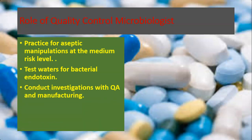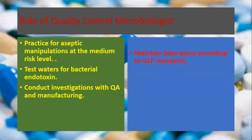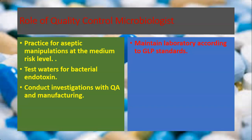They have to conduct investigations with quality assurance and manufacturing. The next role of the quality control microbiologist is to maintain the laboratory according to good laboratory practices standards. As per GLP, the quality control microbiologist has to maintain the laboratory of that particular industry.